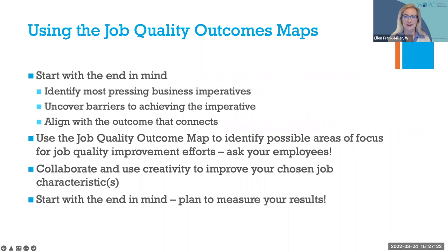To review: using the Job Quality Outcome Maps can help you focus your effort. You want to start with the end in mind — start with the most pressing business imperatives, then raise employee voice to target the most important areas to improve job quality for impact. Figuring out how to make change effectively takes collaboration between employees and leadership, and by starting with raising employee voice you've set the stage to do that. And here is my researcher plug: start with the end in mind and do not make a move until you have a plan to measure your results. You've got to get that baseline in order to see if your efforts are working out the way you intended.